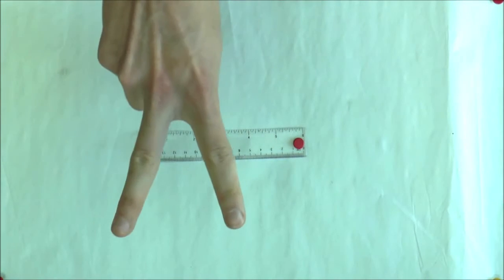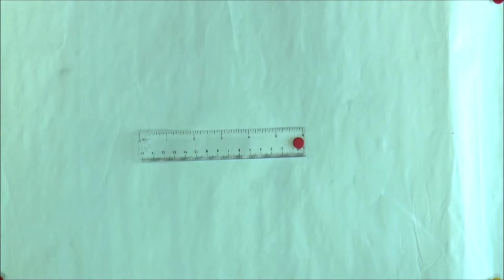In effect, we have removed two degrees of freedom from the ruler, by means of a fixed pin support, which allows rotation but not translation. However, it is still a mechanism because it has one degree of freedom left.